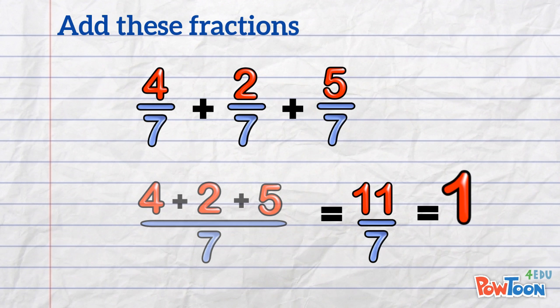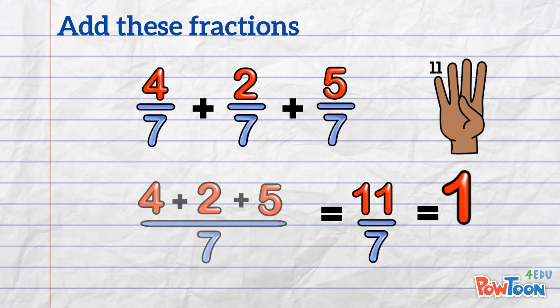How many groups of 7 are there in 11? There's 1 lot of 7. And what's left over? Count it up. 8, 9, 10, 11! 4 left over! And that's our numerator. Put that back over the original denominator of 7, and we're done!